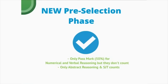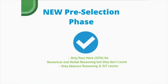Regarding the exam phases: the pre-selection phase is the first step. Something brand new compared to previous competitions is that the numerical and verbal reasoning tests are not counted towards the result of the pre-selection. You only need to pass them with 50% — but the end result does not count towards the final score on which candidates are ranked. The two exams that will be considered for ranking are the abstract reasoning and the situational judgment test.